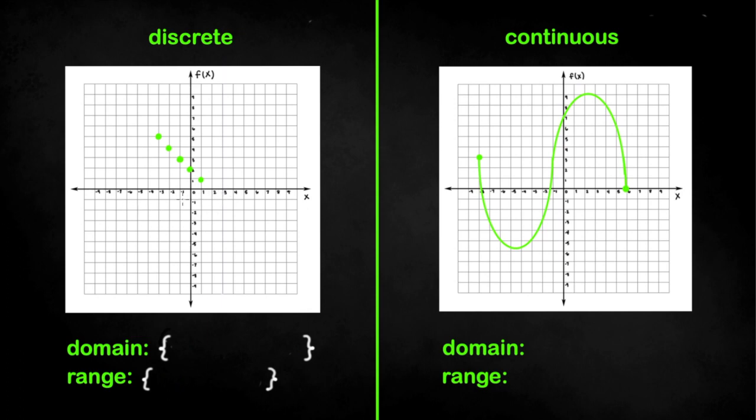Domain goes left and right while range goes up and down. To find domain go to the leftmost point to the rightmost point. For range go from the lowest point to the highest point.